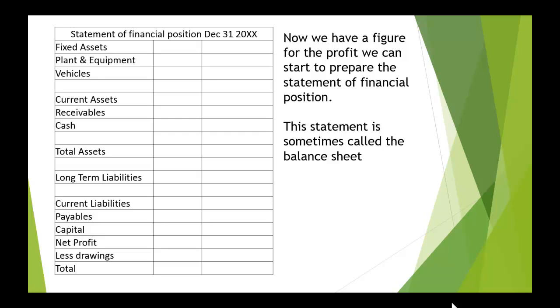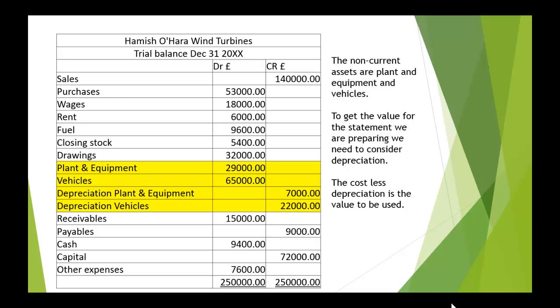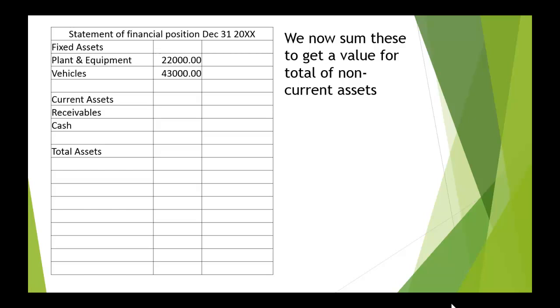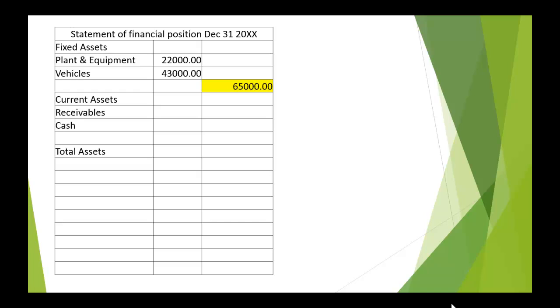Now that we have a figure for profit, we are able to prepare the statement of financial position — though in an older text you may find it still called the balance sheet. We start by looking at non-current assets and take the figures from the trial balance. We must take into account depreciation, so we use cost less depreciation as the value. We enter those onto the statement of financial position and add them together to get the total value for non-current assets.